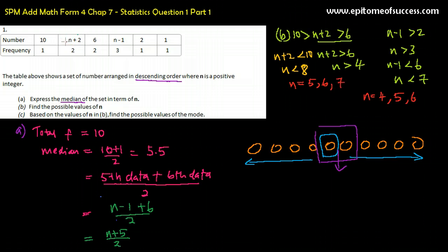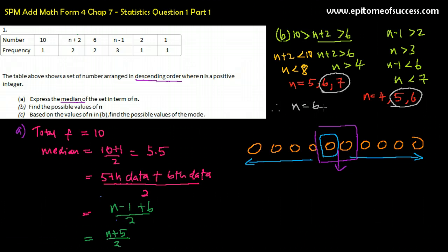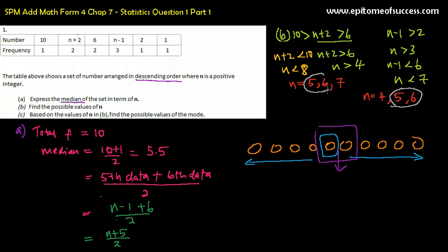So what is the overlap? Because N must fulfill both of these conditions. Looking at the data: one set gives {5, 6, 7} and the other gives {4, 5, 6}. There are only two overlapping values. So the answer is 5 or 6. Therefore, the possible values of N would be 5 and 6.